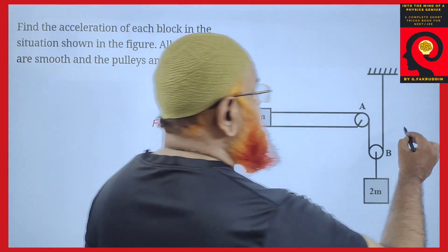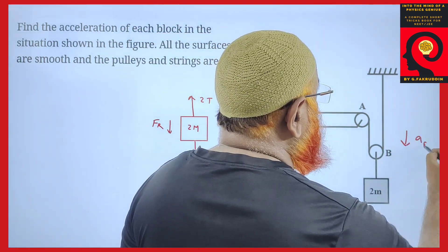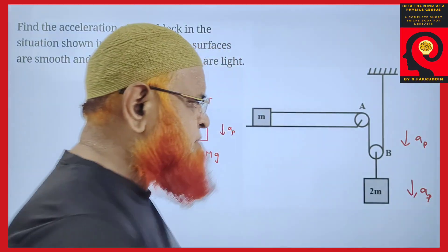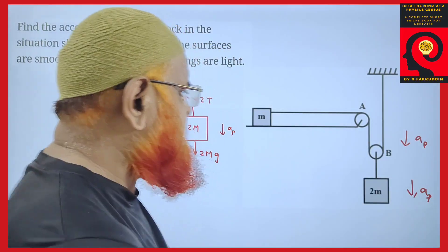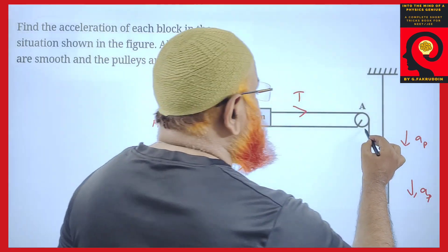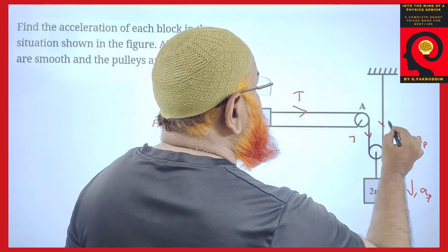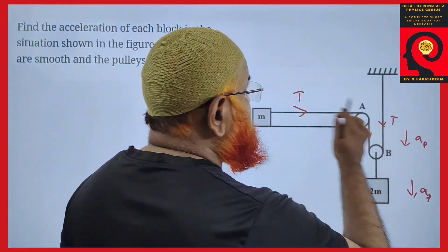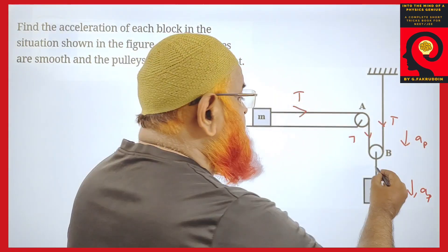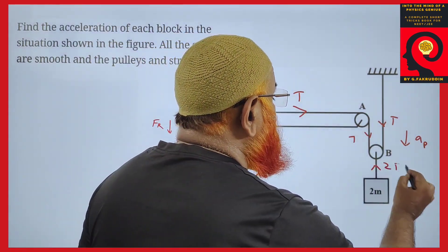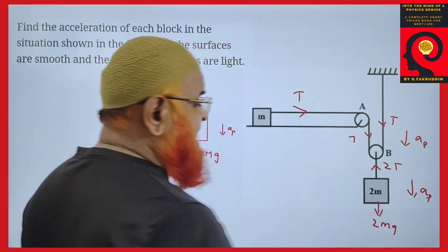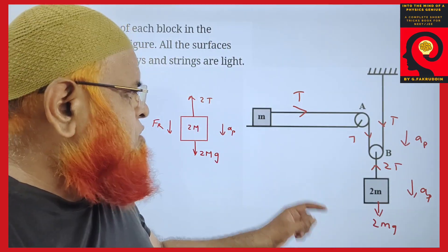You should know one thing: the acceleration of this pulley and acceleration of this block is going to be the same because this block is attached to the pulley. This rope has tension T throughout, so these two tensions combine together as 2T, and 2MG acts downwards.